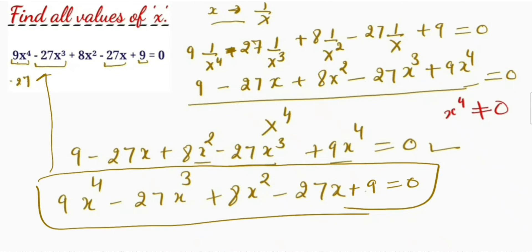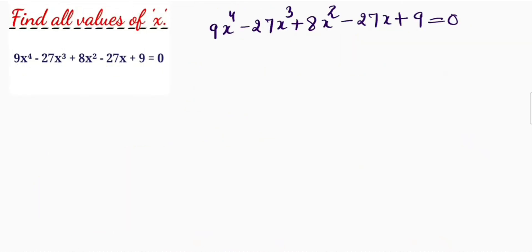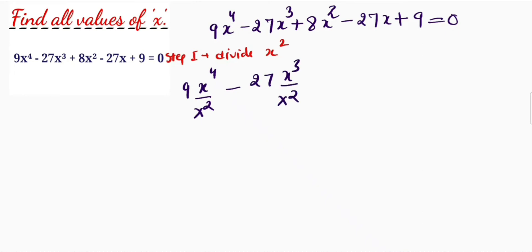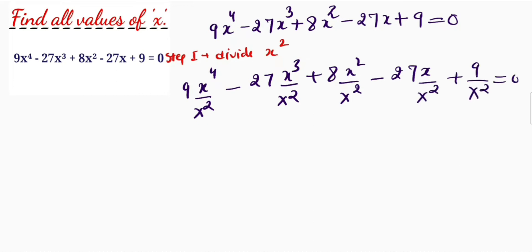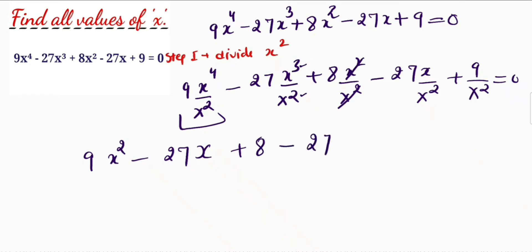Now let's see how we can solve these type of reciprocal equations step by step. The first step I am going to take is to divide this whole equation by x square. So we will get 9x raised to power 4 divided by x square minus 27x raised to power 3 divided by x square plus 8x square upon x square minus 27 times 1 upon x plus 9 upon x square is equal to 0. This simplifies to 9x square minus 27x plus 8 minus 27 times (1/x) plus 9 upon x square equals 0.